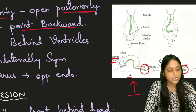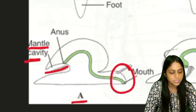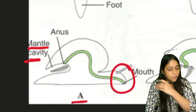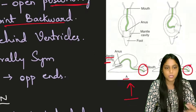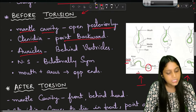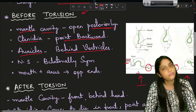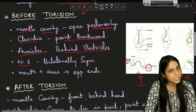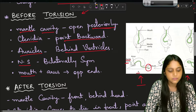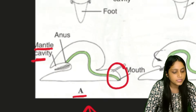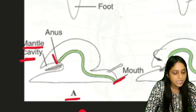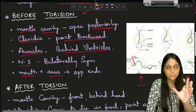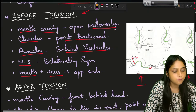Before torsion, the ctenidia (the feather-like structure) are pointing backward. The auricles are present behind the ventricles before torsion. The nervous system is bilaterally symmetrical before torsion. If you observe the mouth and anus, they lie at opposite ends - the mouth at the anterior end and the anus at the posterior end.